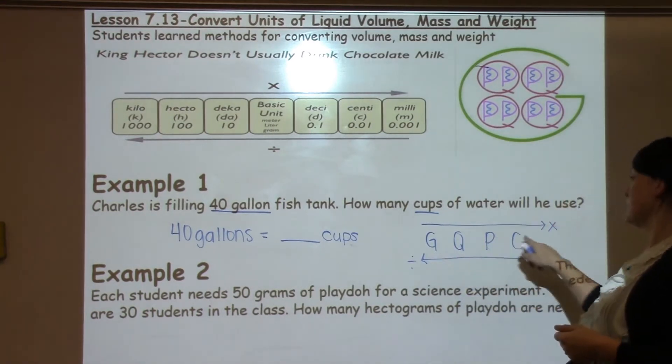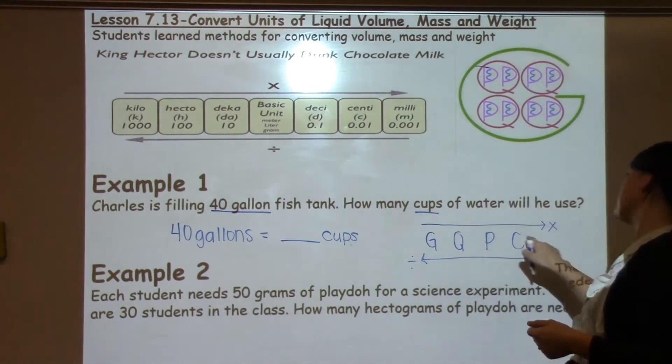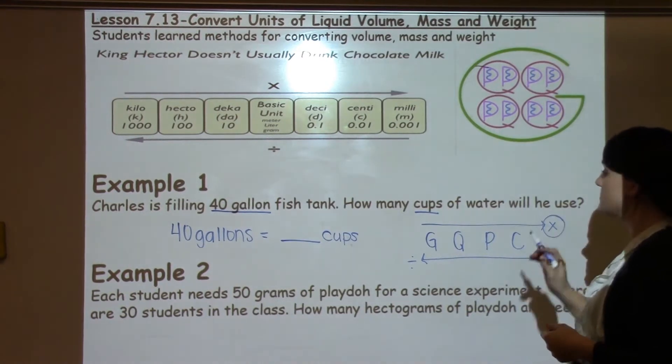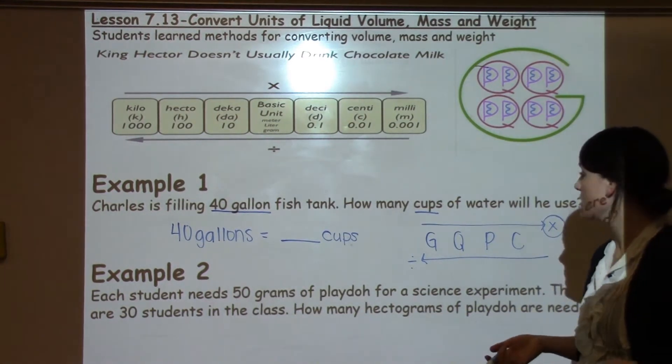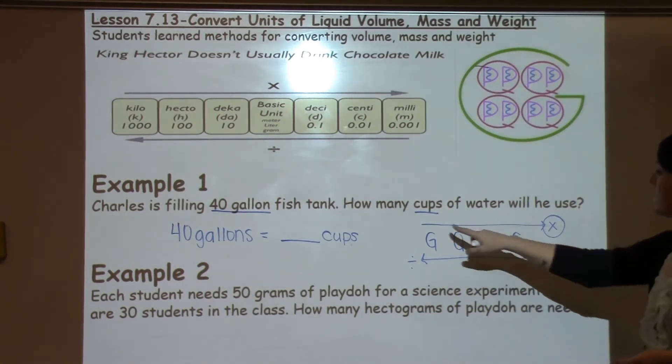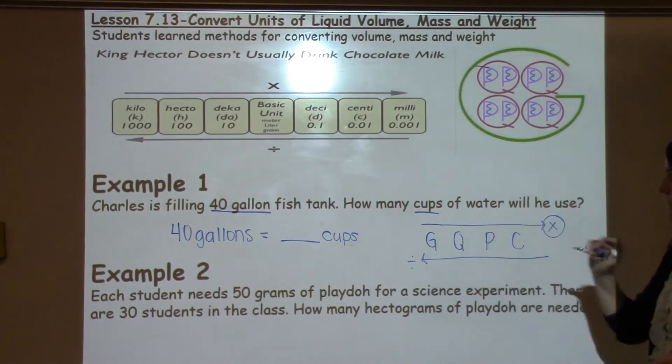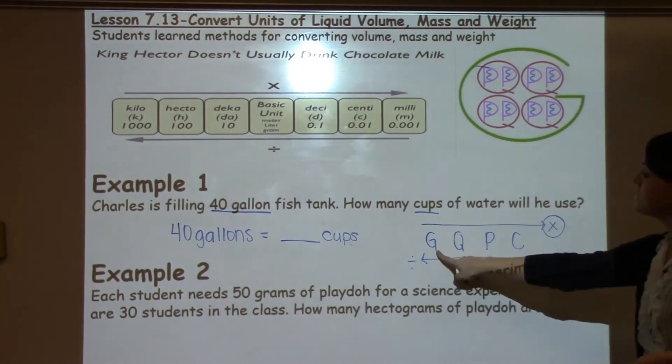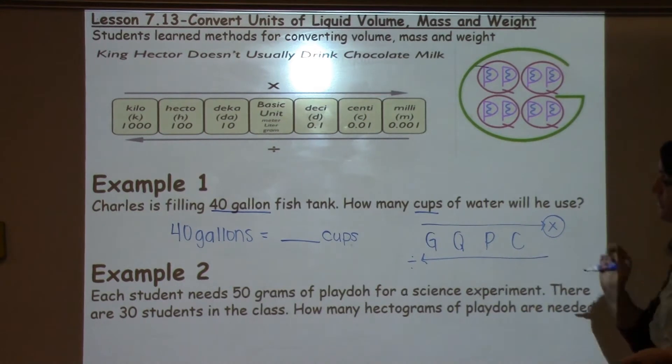I'm moving this direction to get from gallons to cups, so I know that that's going to be a multiplication problem. To set up that helper, you just draw arrows going opposite directions. Those units of measure are going from largest to smallest. That's very important. Times at the top, division at the bottom.